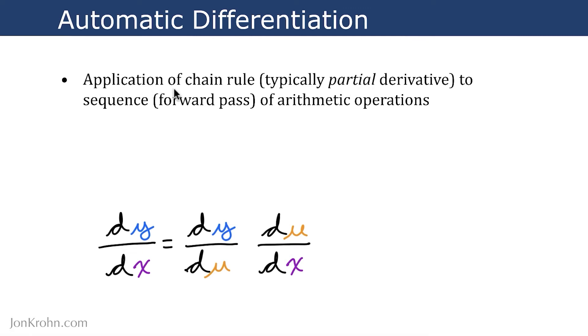It suffices to say for now that it's an application of the chain rule to a sequence of arithmetic operations, a forward pass of arithmetic operations. So I have here down at the bottom an equation that we already learned in segment 2 where we focused on the chain rule. This equation shows how if we have a forward pass of equations where x allows us to compute u and u allows us to compute y, so we have this chain of two functions. From that, we can use the chain rule to multiply the derivatives of the two functions separately and obtain the derivative of y with respect to x.